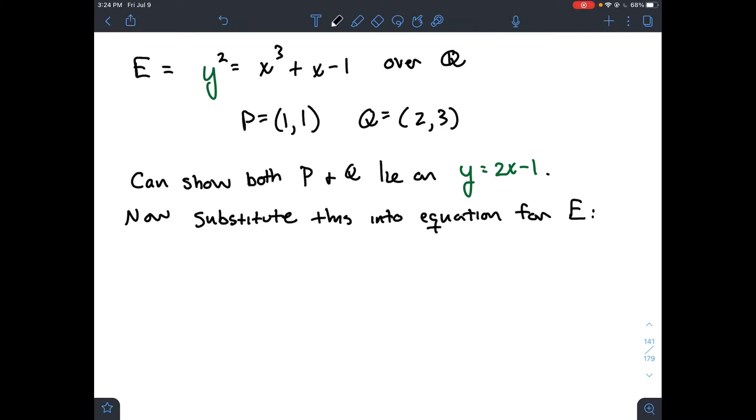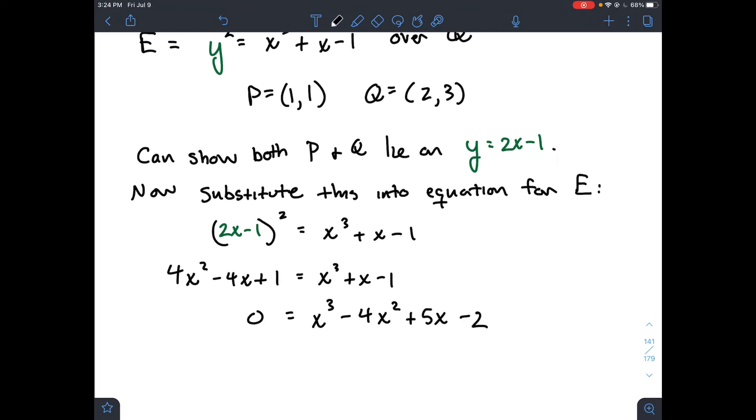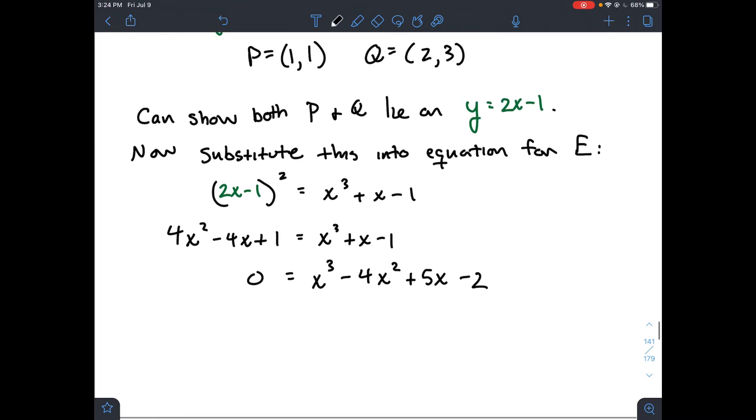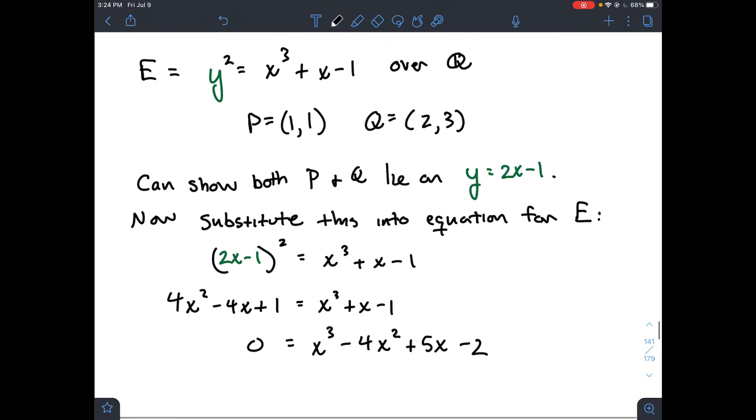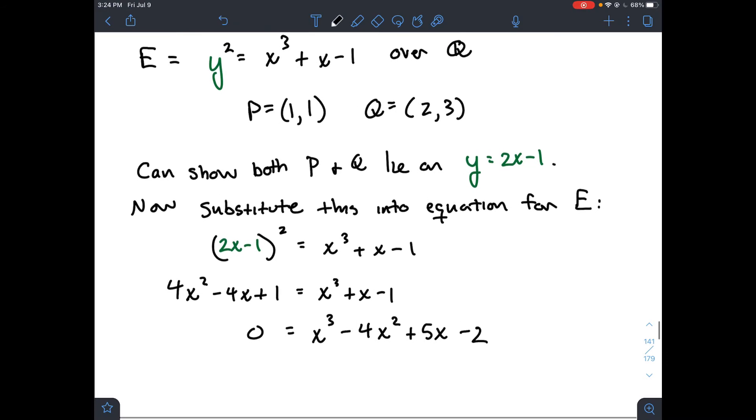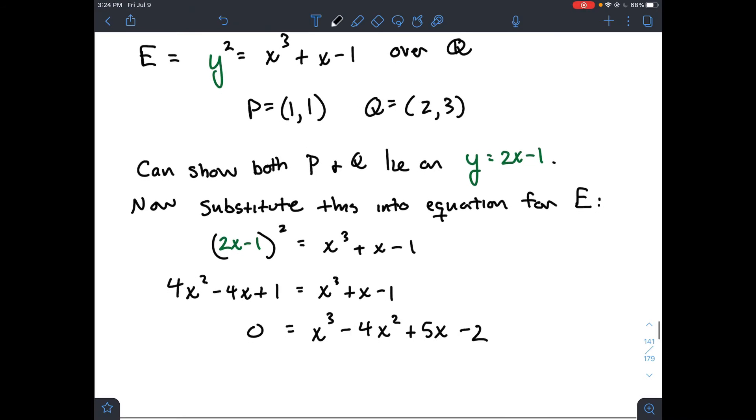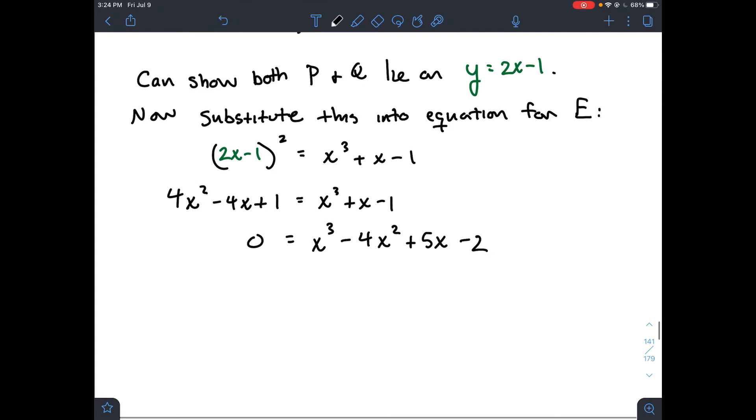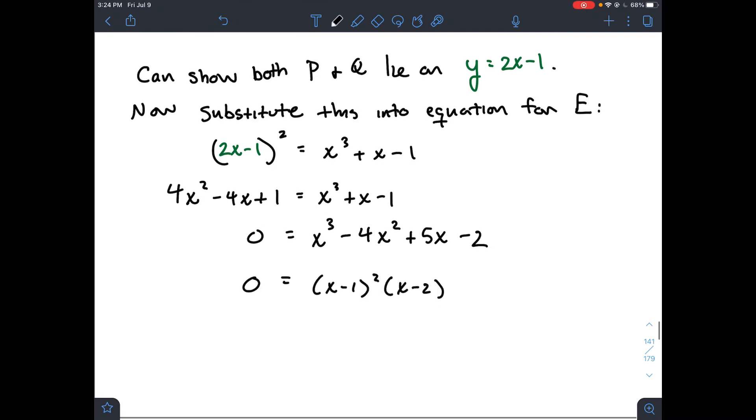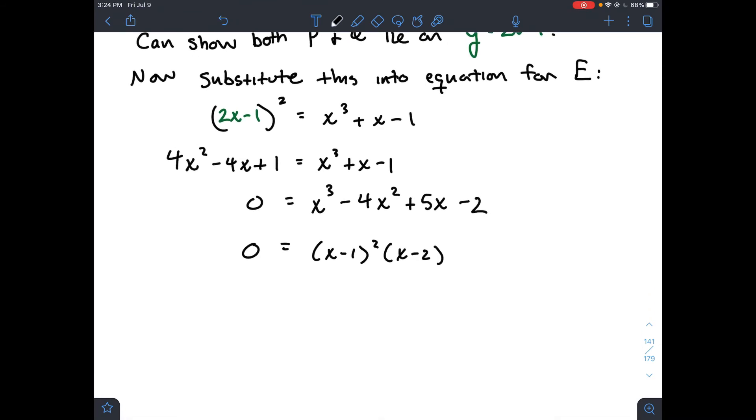And now what you're going to do is you're going to take that and substitute that y into the equation for E. And so I've colored them both green to try to suggest that I'm going to put 2x minus 1 up there where that y is. And I'm going to foil all that out. I get this pretty nasty cubic polynomial. I was very pleased with myself because I made up this example really just kind of off the top of my head. And it worked out to be a cubic that factored. How often can a teacher say that an example they made up actually worked out pretty nicely. So anyway, this thing factors as (x minus 1) squared times (x minus 2).